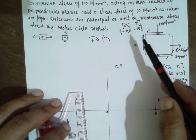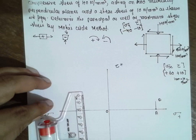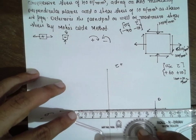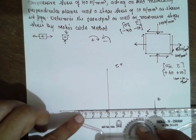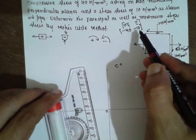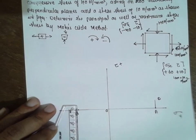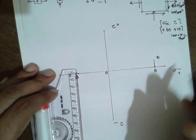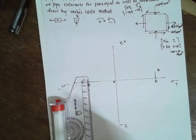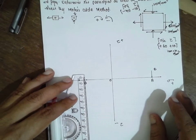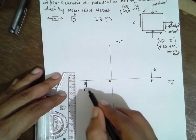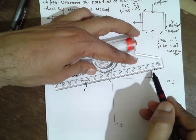Next, from the figure, sigma y is minus 40. From O, it is minus 40 — this side is minus 40. This is point B. Tau is minus 10, meaning bottom — minus 10, go a little bit to the bottom. This is point A. Join this point to this point — you have to join them.